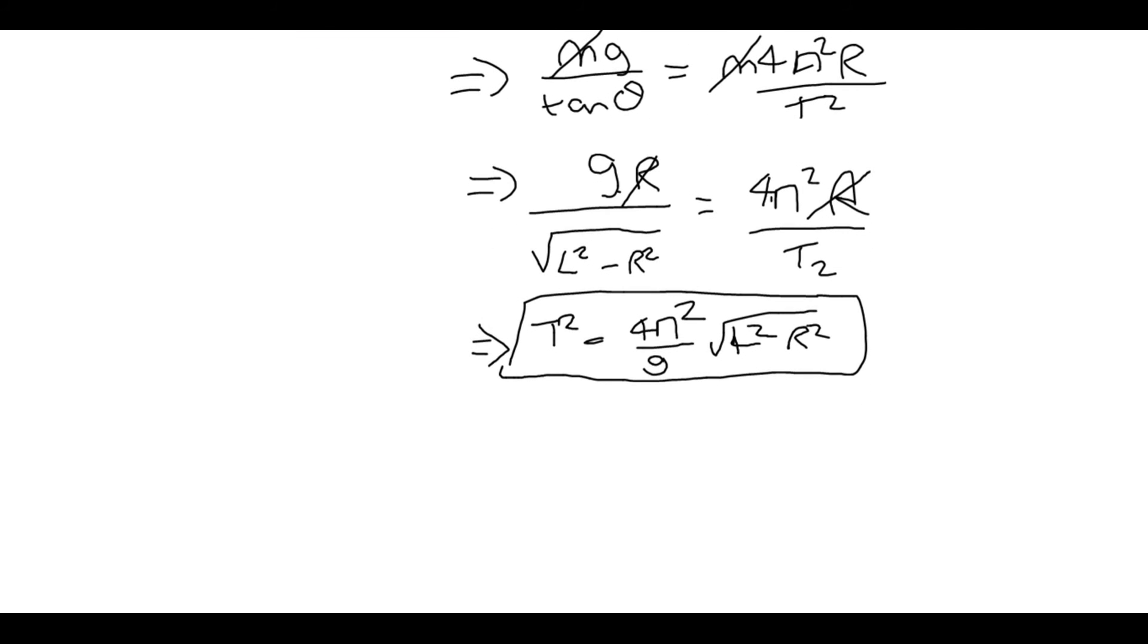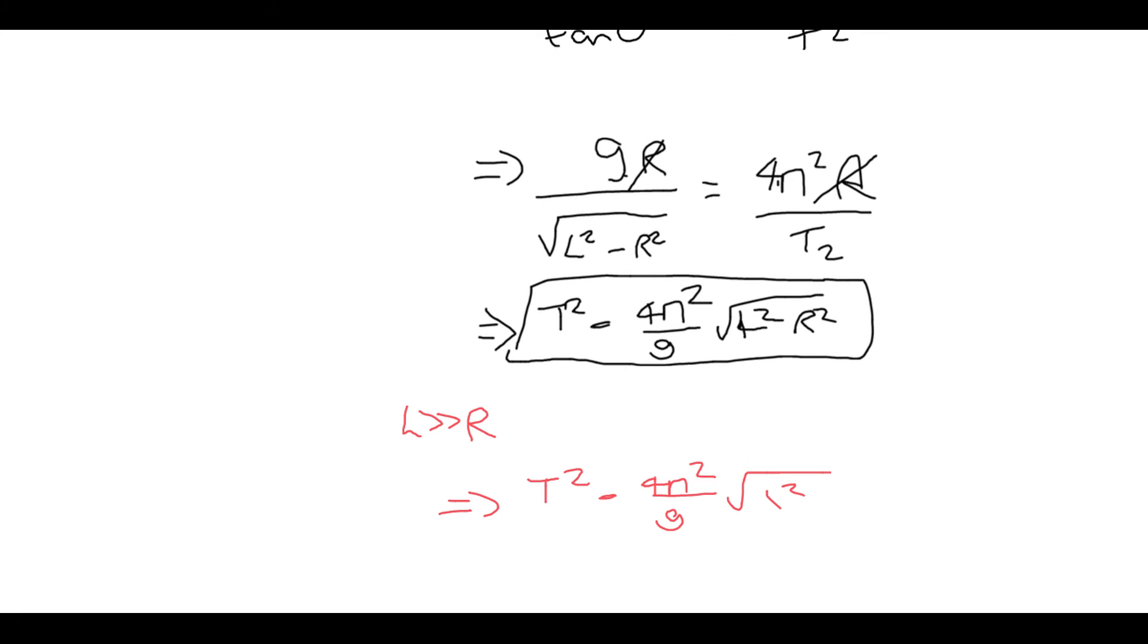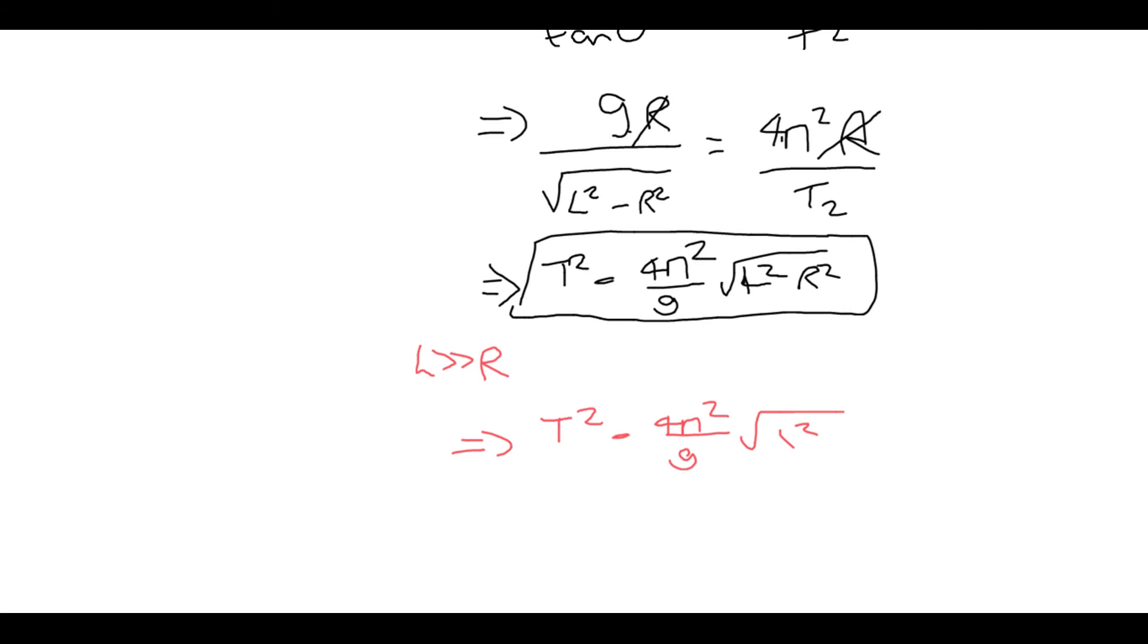So if our length is considerably greater than our radius, what we can then say is that the r squared term is essentially negligible. So what we get is t squared equals 4 pi squared over g square root of l squared like this.